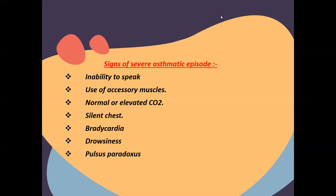Other severe signs include bradycardia, drowsiness or altered mental status change due to CO2 retention, and pulsus paradoxus. In a severe asthmatic exacerbation with lung hyperinflation, increased pressure on the right and left ventricle reduces blood ejected from the left ventricle, causing the systolic blood pressure to drop more than 10 mmHg. This is pulsus paradoxus.